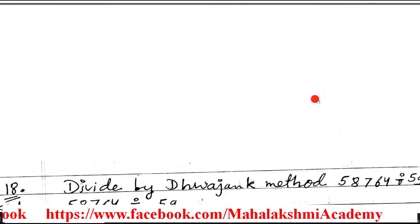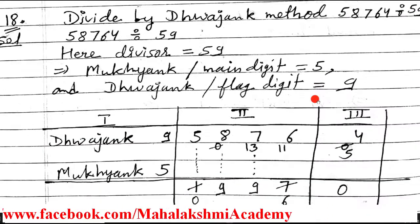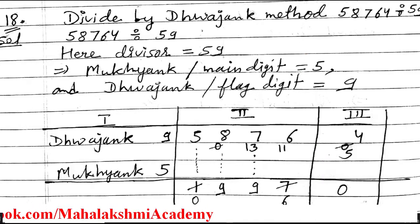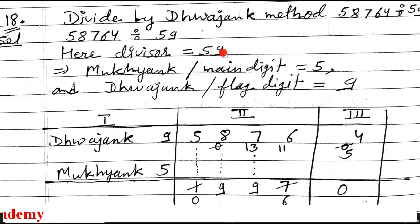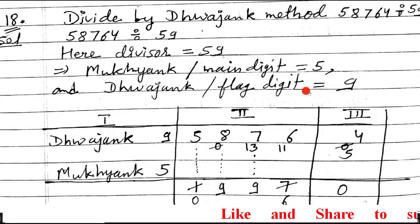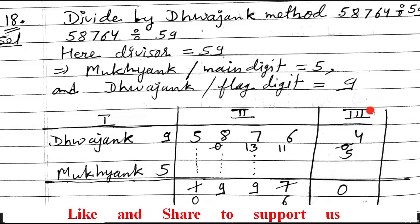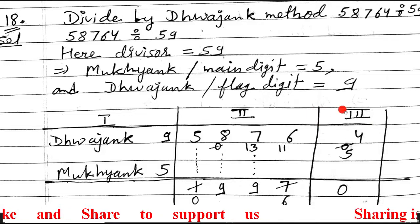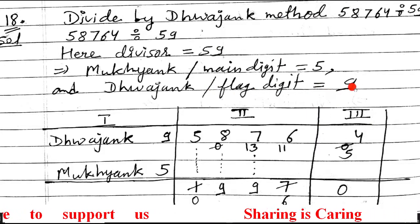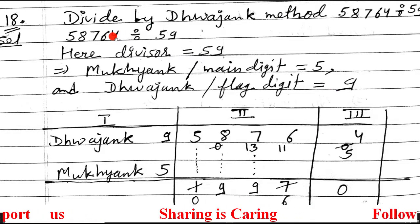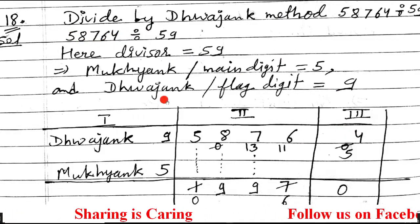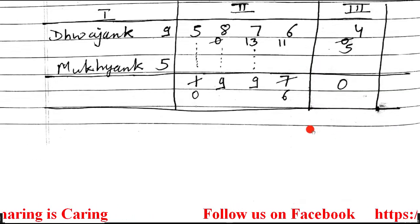Next is question 18, also by the Dwajang method. Divide by 59. Write 59. Flag digit (Dwajang) is 9, and Mukhyang is 5. Enter in the table — since the flag digit has only one number, only the last digit 4 from the dividend enters the third section, and all remaining numbers enter the second section. Now start the division process.